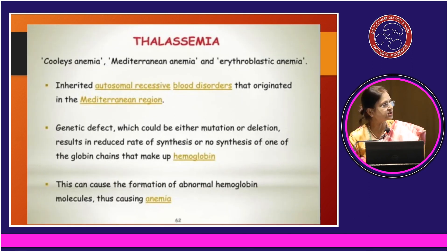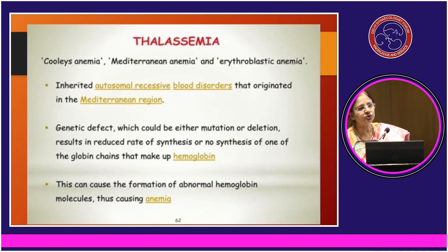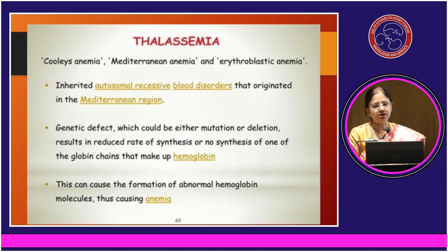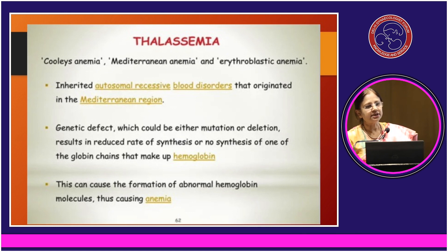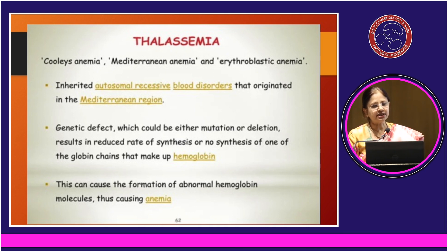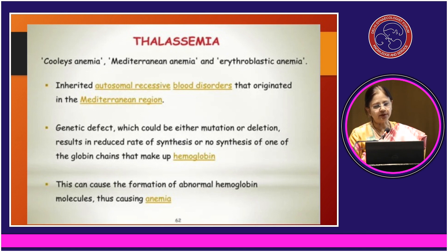Coming to the most important condition as far as obstetricians are concerned — thalassemia, also called Cooley's anemia or Mediterranean anemia. It is an autosomal recessive blood disorder which originated in the Mediterranean. It is basically a genetic defect due to mutation or deletion in the synthesis of the globin chains that make up hemoglobin, causing the formation of abnormal hemoglobin molecules and thus causing anemia.